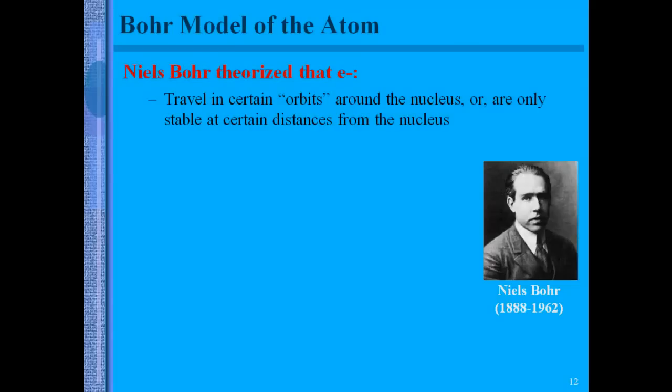Niels Bohr theorized that electrons travel in certain orbits around the nucleus or they only have certain stable distances from the nucleus that they like to stay in. You used to learn the Bohr model had like these rings around the nucleus. That is true in the sense of energy. Each electron will be in a certain energy level, which is a certain distance from the nucleus. But that does not mean those electrons stay in very specific circular paths around the nucleus. If the electron did not stay in this specific energy level, the electron would emit or lose energy, slow down, and eventually crash into the nucleus.